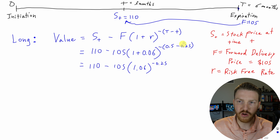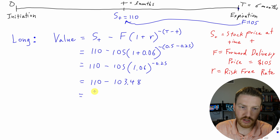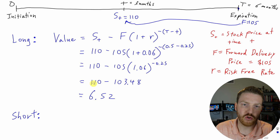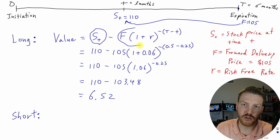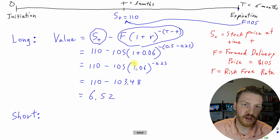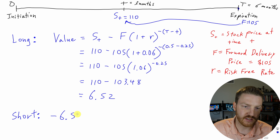After simplifying further, we get 110 minus 103.48, so the total value of our contract is $6.52 — we are up $6 and 52 cents. Now, how much would the value of this contract be to the short position? Because this is a zero-sum game, all you have to do is switch the two expressions. The value to the short position is just the opposite of the value to the long position, so the short is actually down $6 and 52 cents.